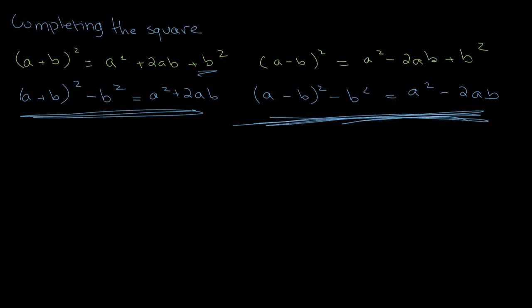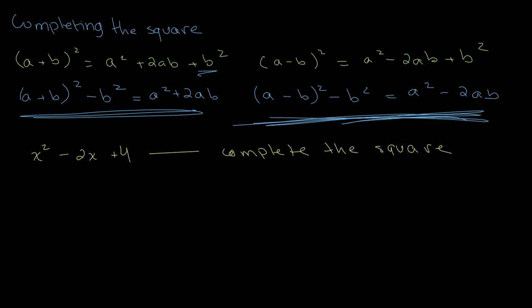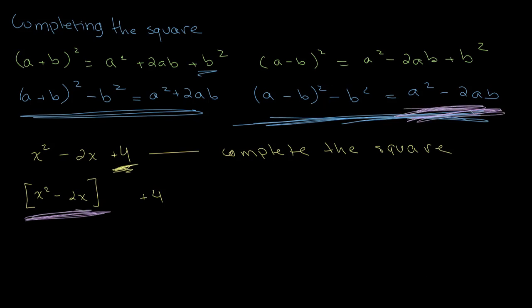Let's move on to our first example. We have the equation x² - 2x + 4 and we have to complete the square. The first step is to separate the constant term: put x² - 2x in a bracket, then plus 4 on the side. We want to make the bracketed part match A² - 2AB, because we have a minus sign.